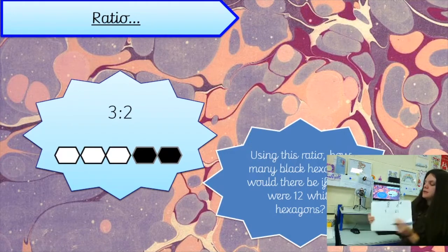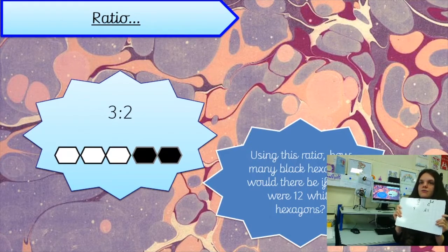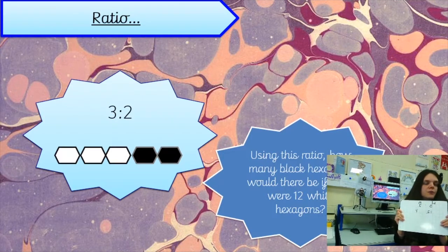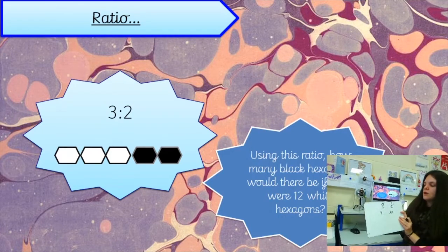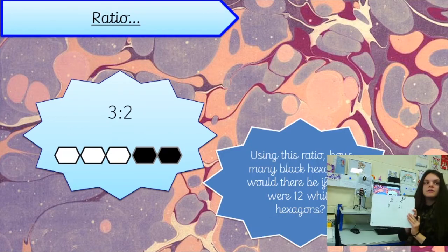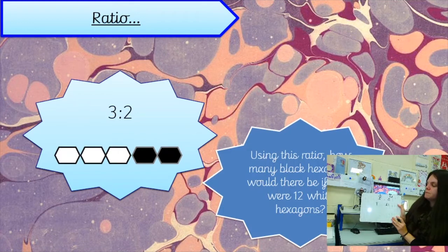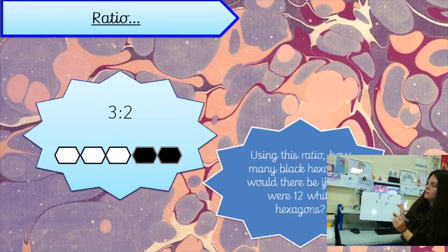If there were 12 white hexagons, how many black hexagons would there be? Cameron's put his hand straight up, and Will and Ben too. Lils, explain it for us — she thought 11, but the answer is 8. Sam explains: for every three white hexagons there would be two black, so three goes into twelve four times, then four times two gives eight. Good job.